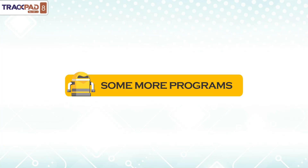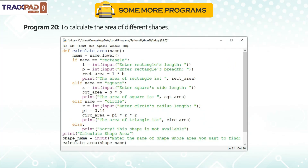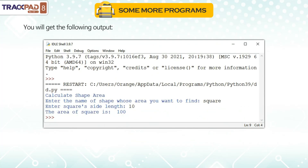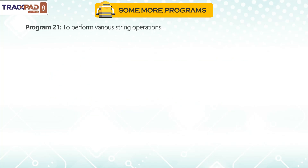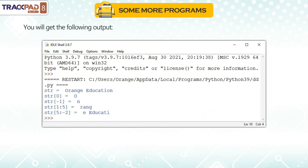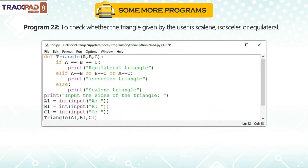Some more programs. Program 20: to calculate the area of different shapes — you will get the following output. Program 21: to perform various string operations — you will get the following output.